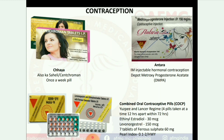Antra is an IM injectable hormonal contraception which is medroxyprogesterone acetate. Combined oral contraceptive pills (COCP) — USP and lanserazine: four pills taken at a time, 12 hours apart, within 72 hours. Ethinyl estradiol 13 mcg, levonorgestrel 150 mcg, seven tablets of ferrous sulfate 60 mg, pearl index 0.1 to 2 HWY.